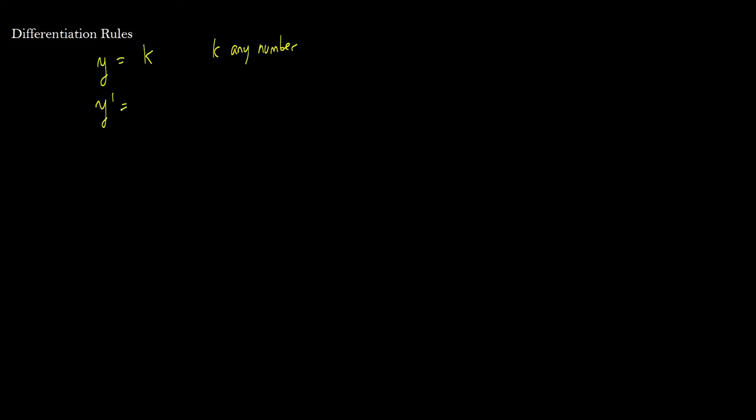First, if we take the derivative of a constant — so we take y equal to some constant k, where k is any number — then y prime, the derivative, is equal to 0.